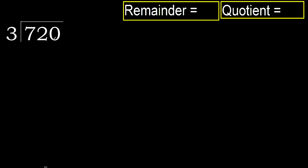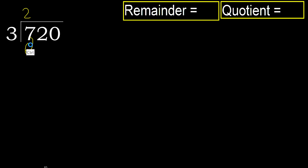720 divided by 3. 7 is not less, therefore with 7: 3 multiplied by which number is nearest but not greater? 3 multiplied by 3 is 9, which is greater. 3 multiplied by 2 is 6, which is not greater. So 7 minus 6 is 1.